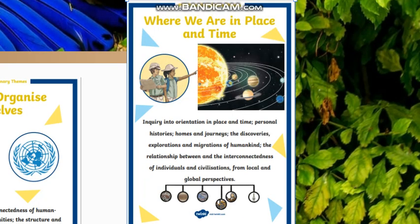In Unit 2, as you can recall, we studied about where we are in place and time. We talked about the relationship between humankind and the interconnectedness of individuals and civilizations. We also talked about houses and how we build them. The materials we use for building some houses are wood. If you recall the stilt house, the hut, the chalet, or the tree house — what do we use to build them? Trees, logs, wood. Where do we get them from? From plants. So, is it connected? Of course it is connected.